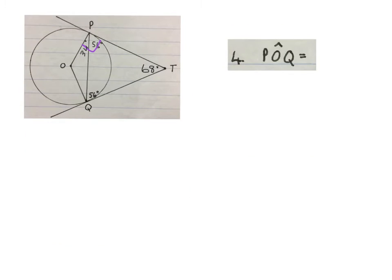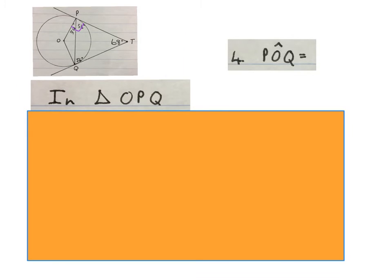The next angle they want us to work out is POQ. Finger on P, to O, to Q. P to O to Q, the angle there. Then we start in triangle OPQ. O, P, Q back to O. We're going to work in that triangle.